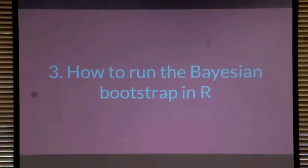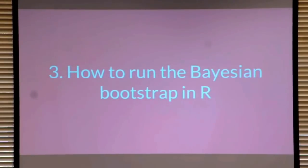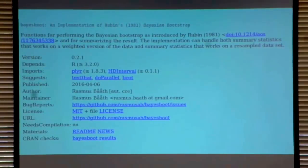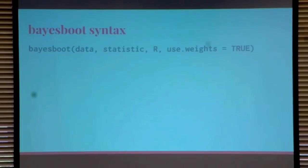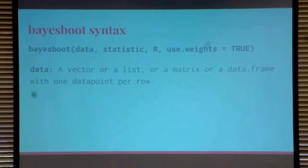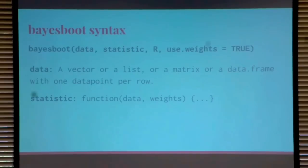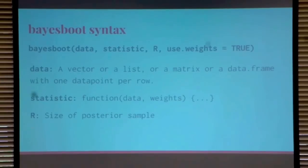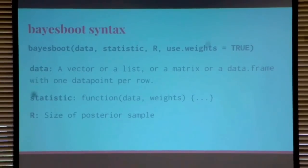But how to run the actual Bayesian bootstrap in R? I recommend you use my package called bayesboot. It's available on CRAN, and it has one main function called bayesboot, which is pretty similar to the boot function in R. It takes some data — a vector, list, matrix, or data frame with one data point per row. It takes a function implementing the statistic, which takes the data as the first argument and probability weights as the second argument. Finally, there's R — the number of draws you want from the posterior.